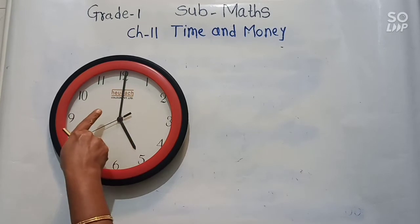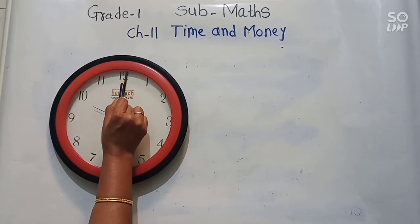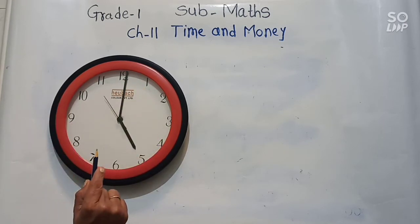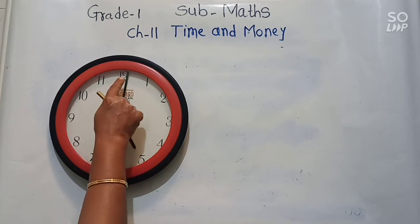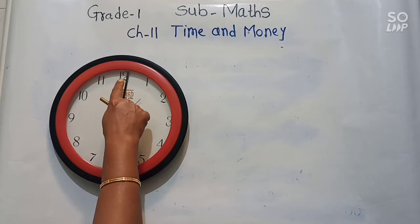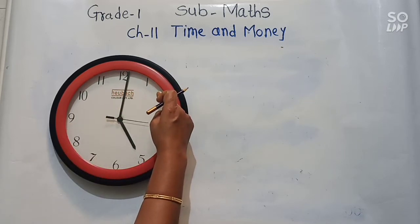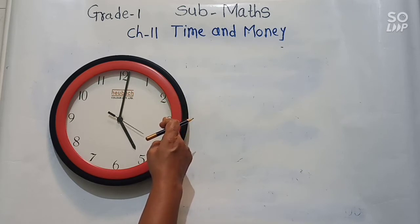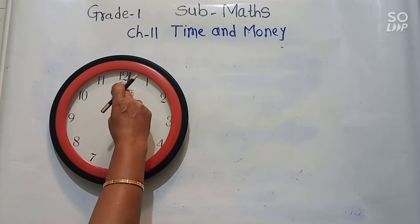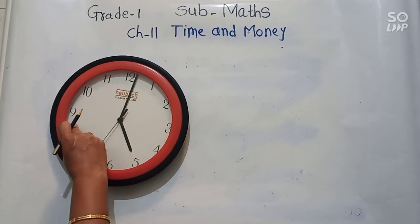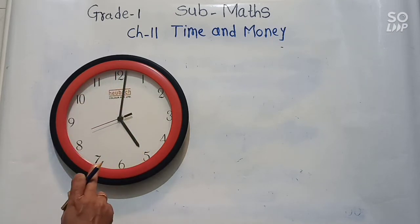Look here — the minute hand is on 12. When the minute hand moves from one number to the next number, it completes 5 minutes. So from 12 to 1 is 5 minutes, from 1 to 2 is again 5 minutes, from 2 to 3 is 5 minutes. When the minute hand moves all the way around and comes back to 12, it has completed 60 minutes.